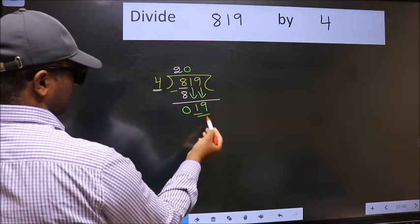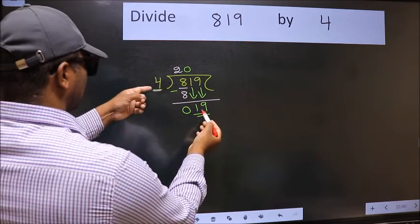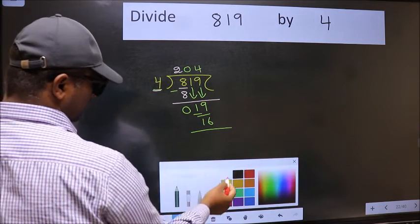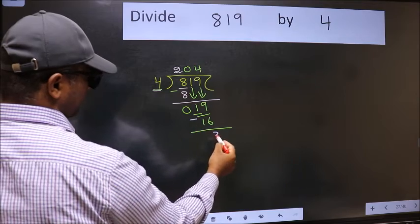Now 19. A number close to 19 in 4 table is 4 fours are 16. Now we should subtract. We get 3.